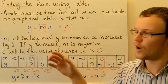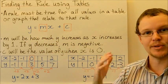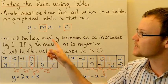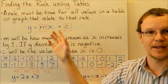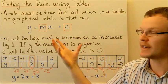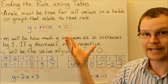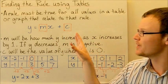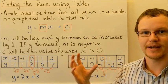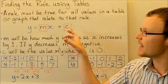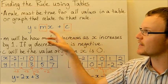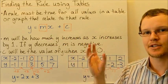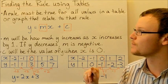So x and y are the variables that are in the relationship — they're the ones being related. But m could be any positive or negative number, and c as well can be any number. We can find what they are to suit the rule that we have.